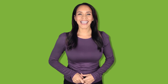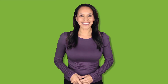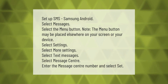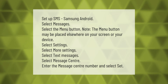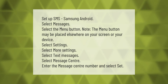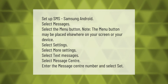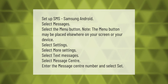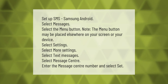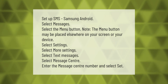To set up SMS on a Samsung Android device: select Messages, select the Menu button — note the Menu button may be placed elsewhere on your screen or device — select Settings, select More Settings, select Text Messages, select Message Center, enter the Message Center number, and select OK.